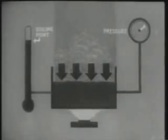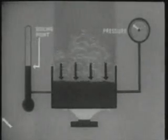We know that when a liquid is heated to a certain temperature, it boils and changes to a gas. However, it is possible to cause the same liquid to boil at a lower temperature. This is done by controlling the pressure upon the liquid. The higher the pressure, the higher the boiling point temperature. The lower the pressure, the lower the boiling point temperature.